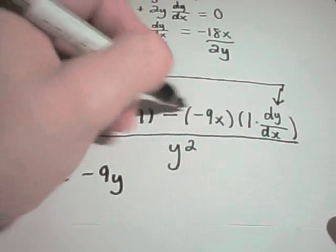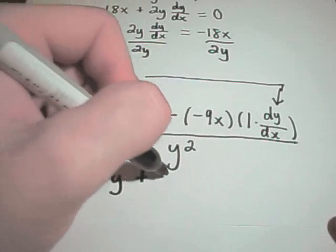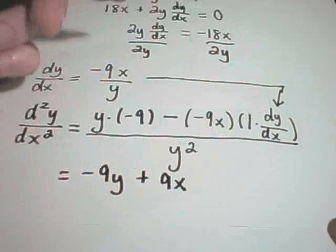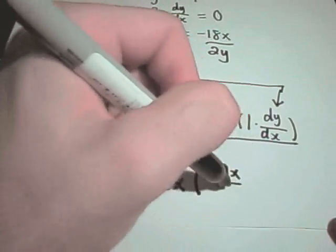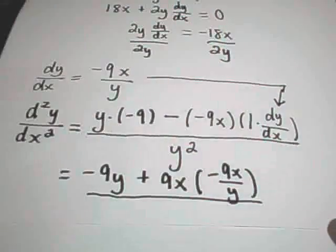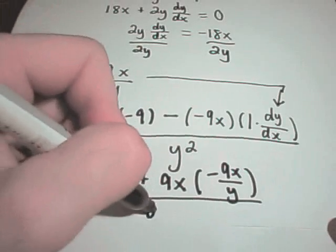So we'll have negative 9y, two negatives make a positive. I'll have 9x, and I'm going to plug in, again, that my dy dx is negative 9x over y. And again, that's all being divided by y squared.